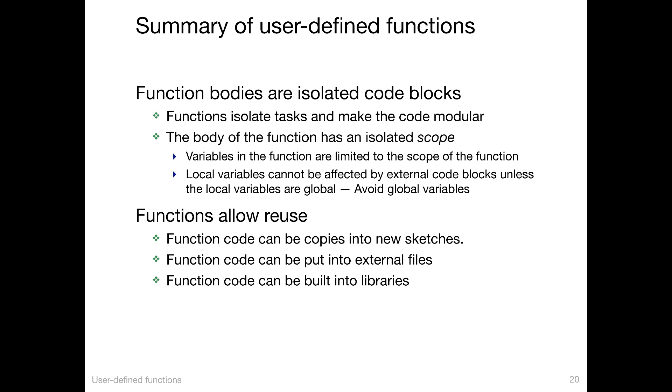Function bodies are isolated code blocks. Isolated in the sense that those tasks inside the function allow us to make the code modular. So we don't need to worry about the details. The body of the function has an isolated scope, meaning that the variables in the function are limited to that scope. Local variables cannot be affected by external code blocks unless the local variables refer to global variables. So in general, you want to avoid global variables because it breaks down this advantage of limiting the scope of a variable.